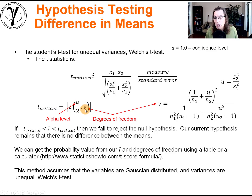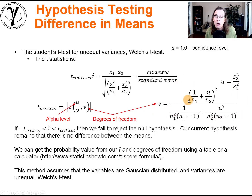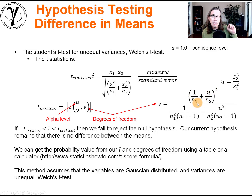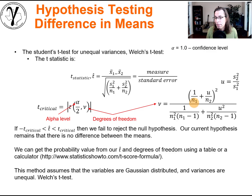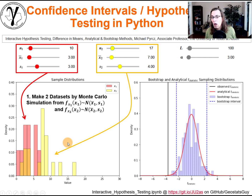For the Welch's t-test for difference in means with unequal variances, the degrees of freedom are a little bit complicated. We won't spend time explaining them here, but suffice it to say they integrate the idea of the number of data involved — which makes perfect sense when talking about degrees of freedom — and they also account for the overall dispersion within the problem.